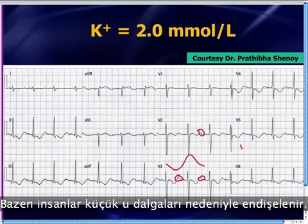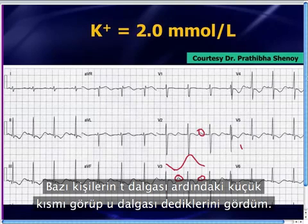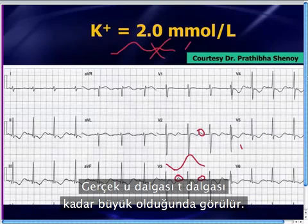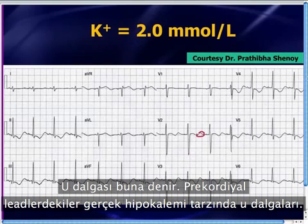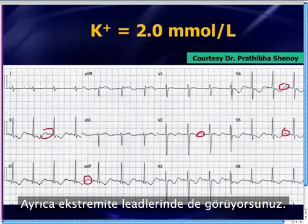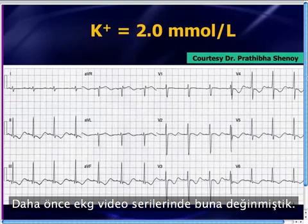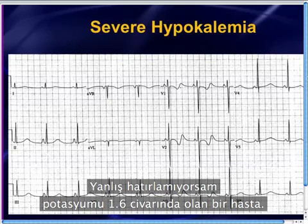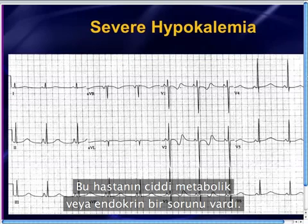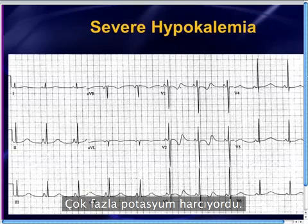Sometimes people get anxious about tiny little U-waves — someone will say there's a T-wave and oh, there's a little U-wave. But that's not a real U-wave. A real U-wave is when it gets as big as the T-wave or goes even higher than the T-wave. These are real hypokalemia-type U-waves in those precordial leads, and you see it in the limb leads as well. Here's a patient with a potassium of about 1.6, who had some type of severe metabolic or endocrine problem and was wasting a lot of potassium.